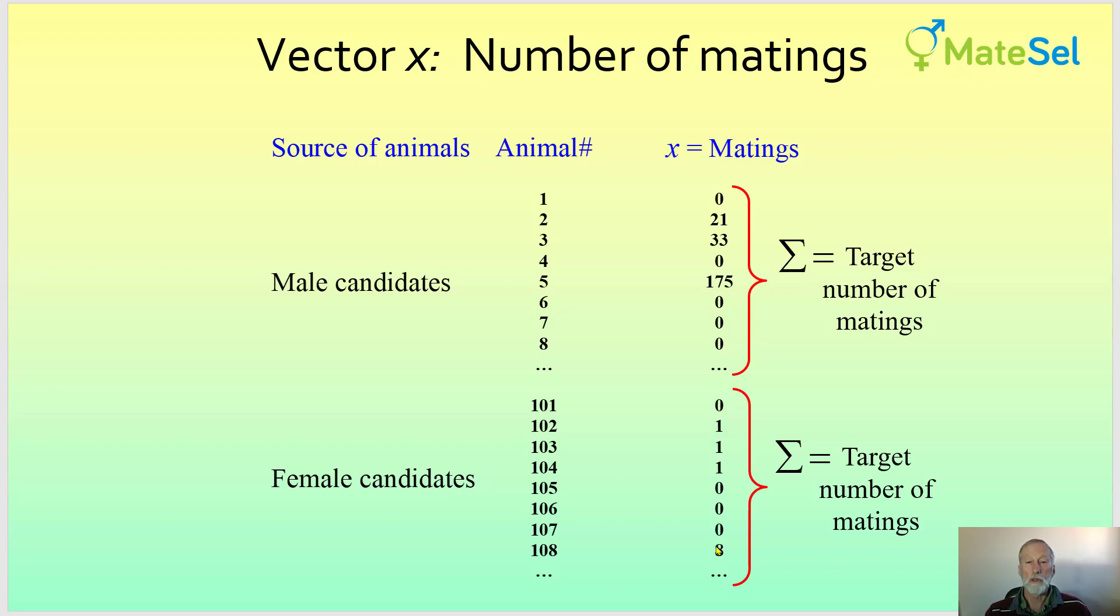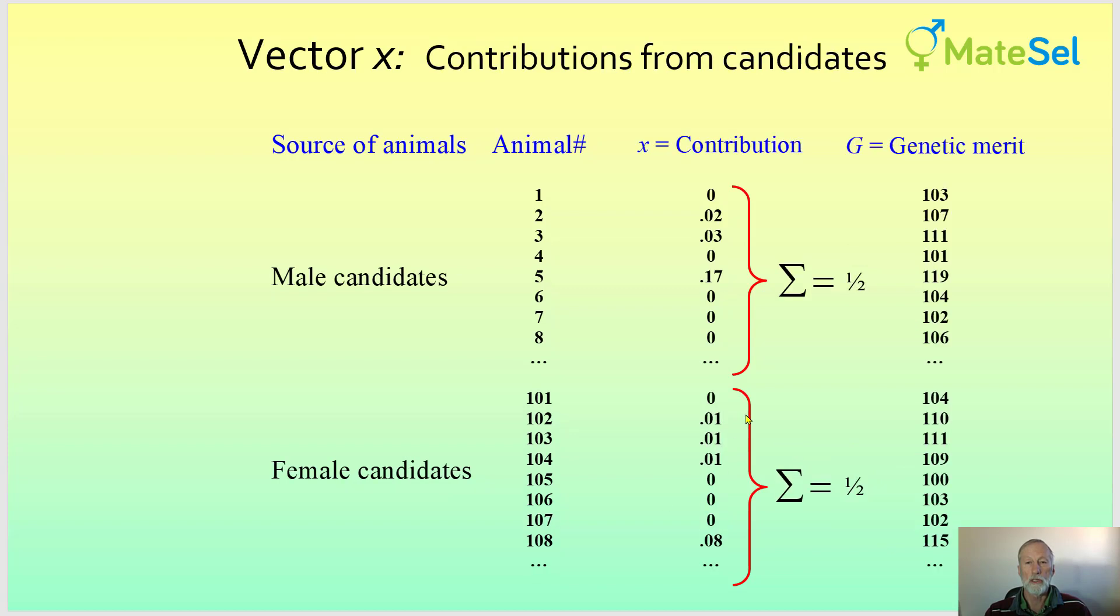But for the illustration here, we're going to look at these contributions in proportional terms, so that for males they sum to a half and females they sum to a half. It's the calculation of the contribution of that individual to the next generation.